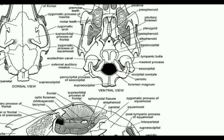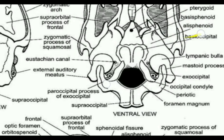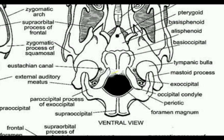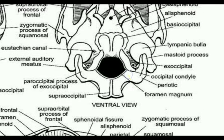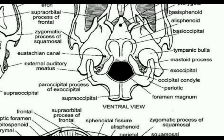On the sides of the foramen magnum, you can see two knob-like prominences called occipital condyles. These occipital condyles are for articulation with the first vertebra.